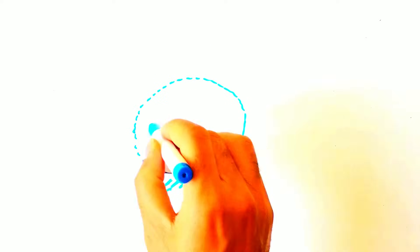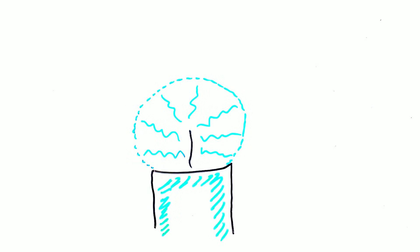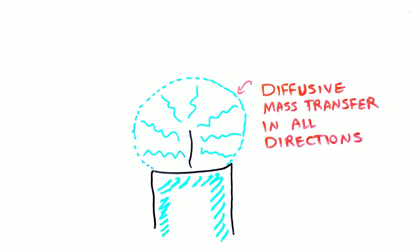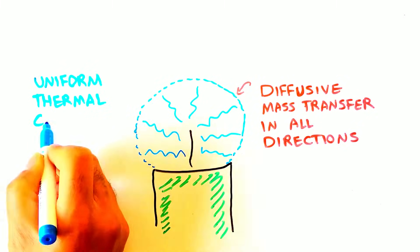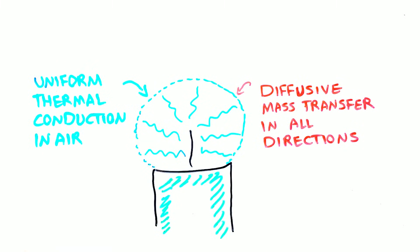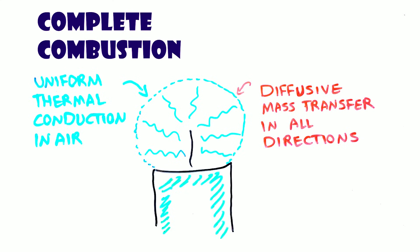This is because mass transfer will dominantly occur by diffusion through the air in all directions around the wick. Also, in the absence of natural convection, a uniform distribution of heat is made around the wick due to thermal conduction in the air. This leads to complete combustion of the carbon content which makes the flame glow blue.